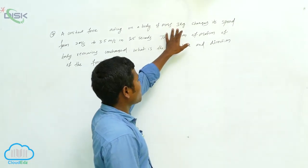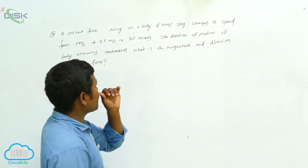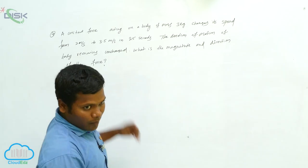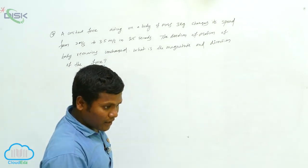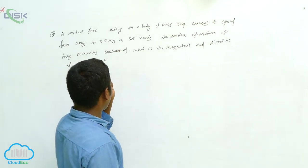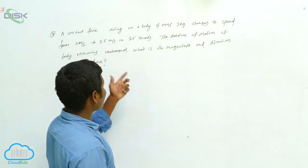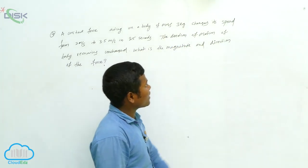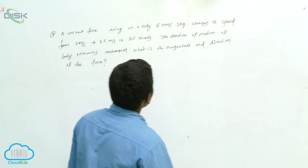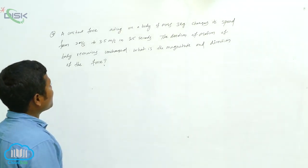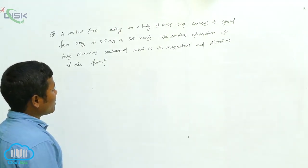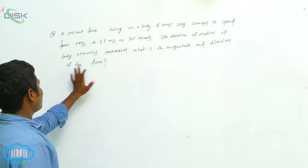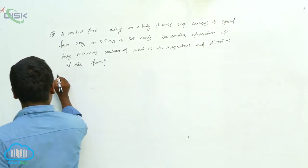So the given data: a constant force acting on a body of mass three kilograms changes its speed from two meters per second to three point five meters per second. Time taken is twenty-five seconds, and the direction of motion remains unchanged. We need to find the magnitude and direction of the force.